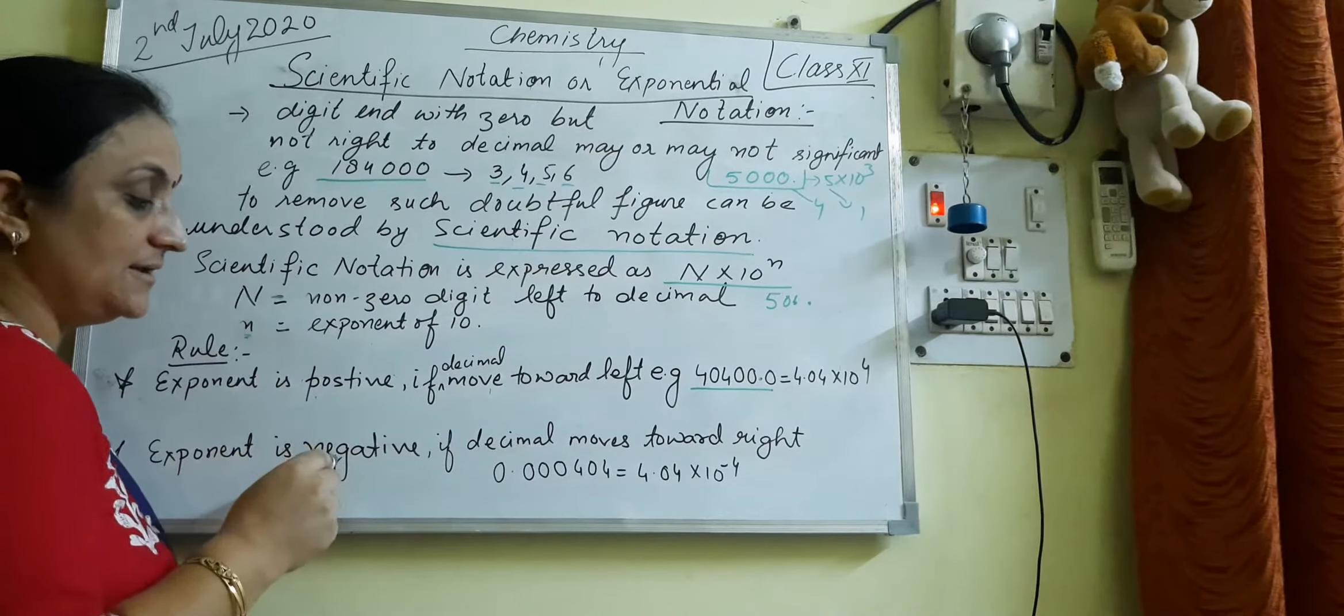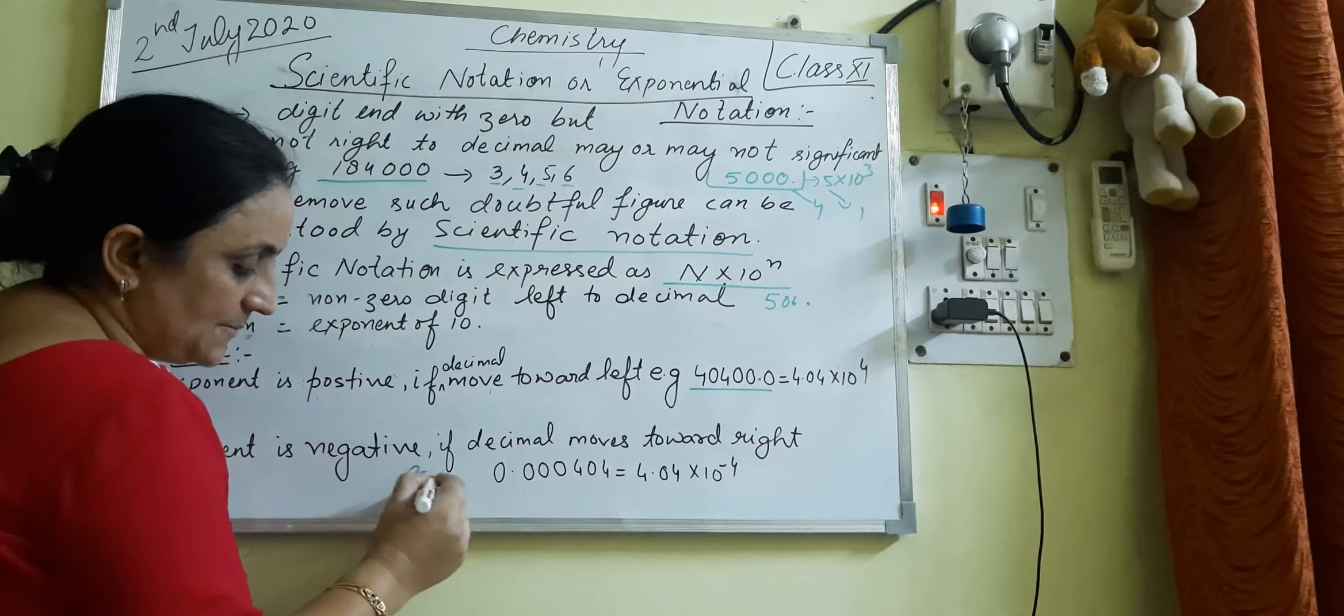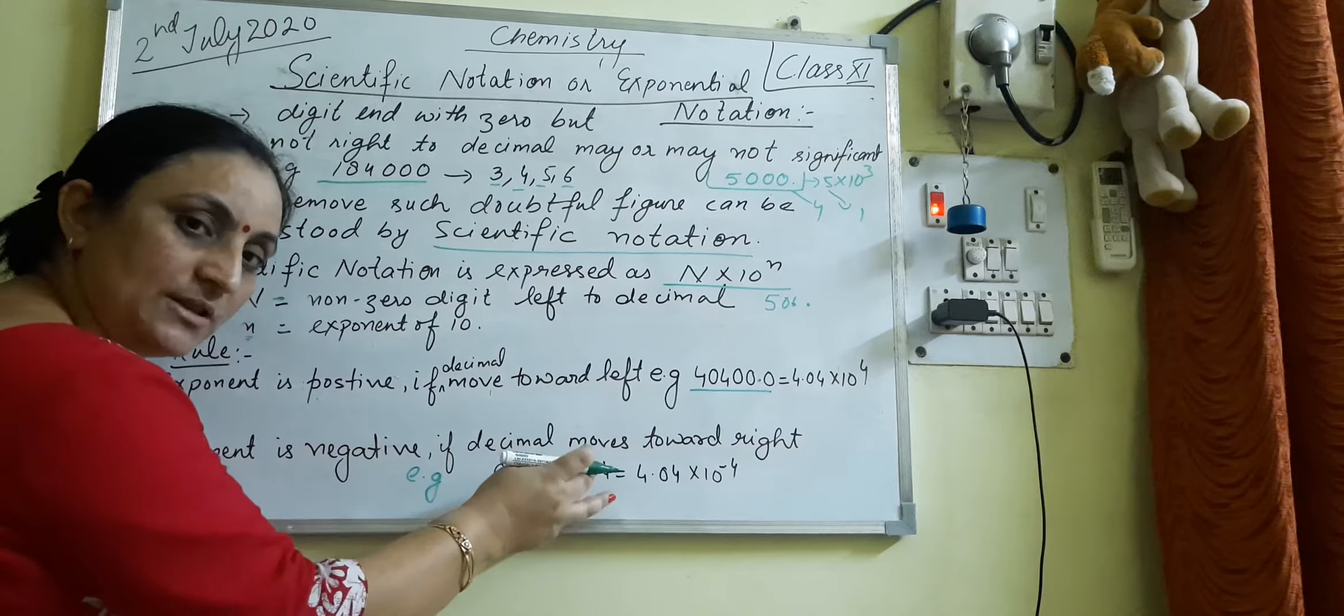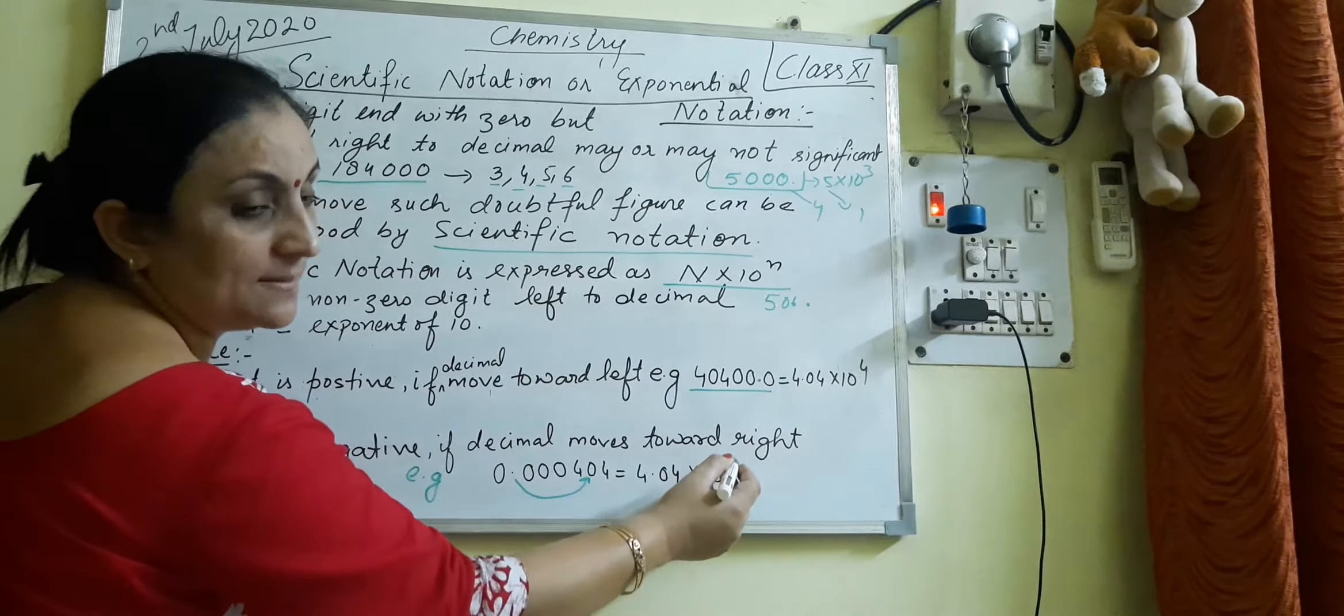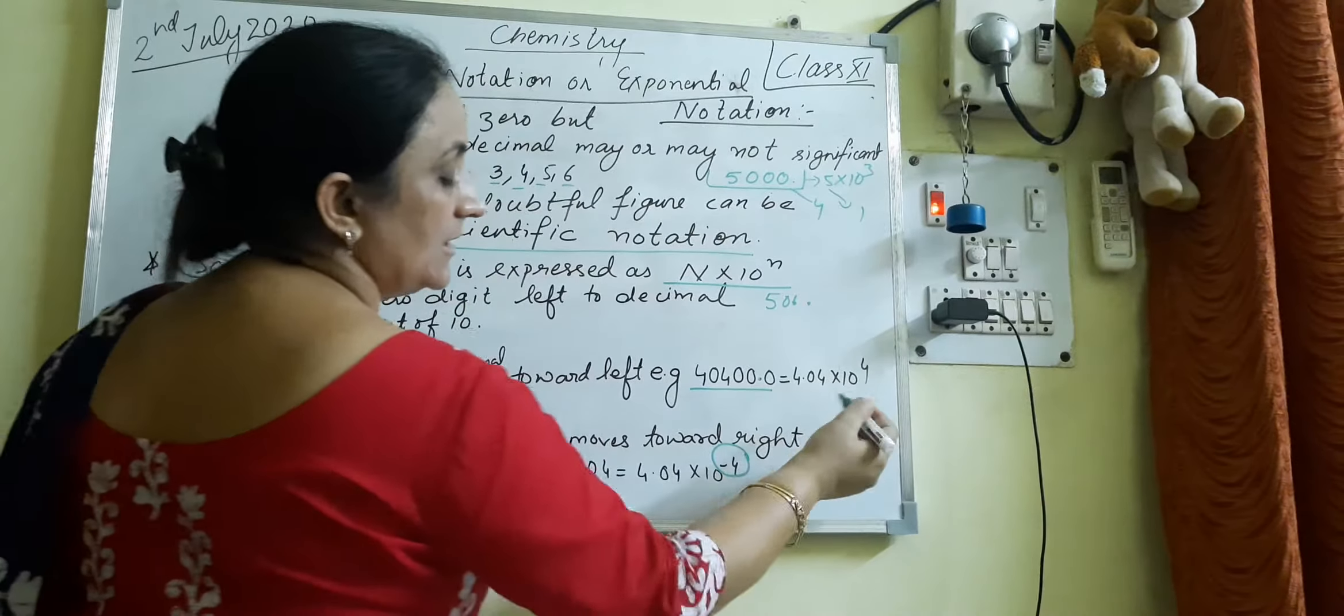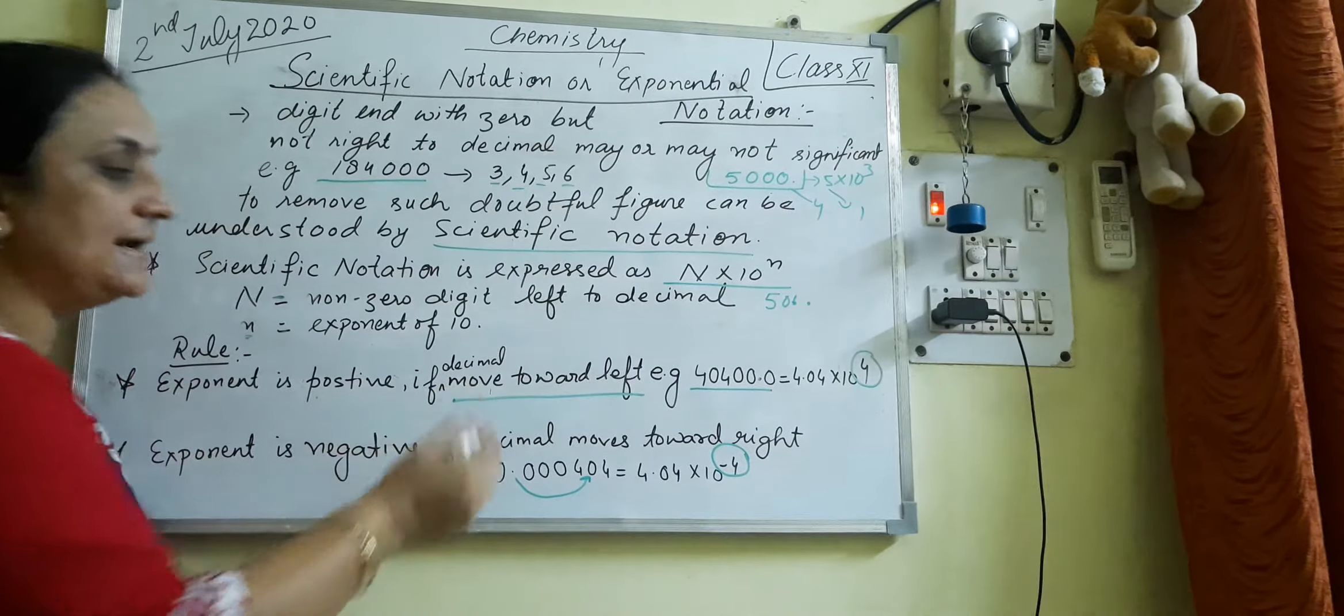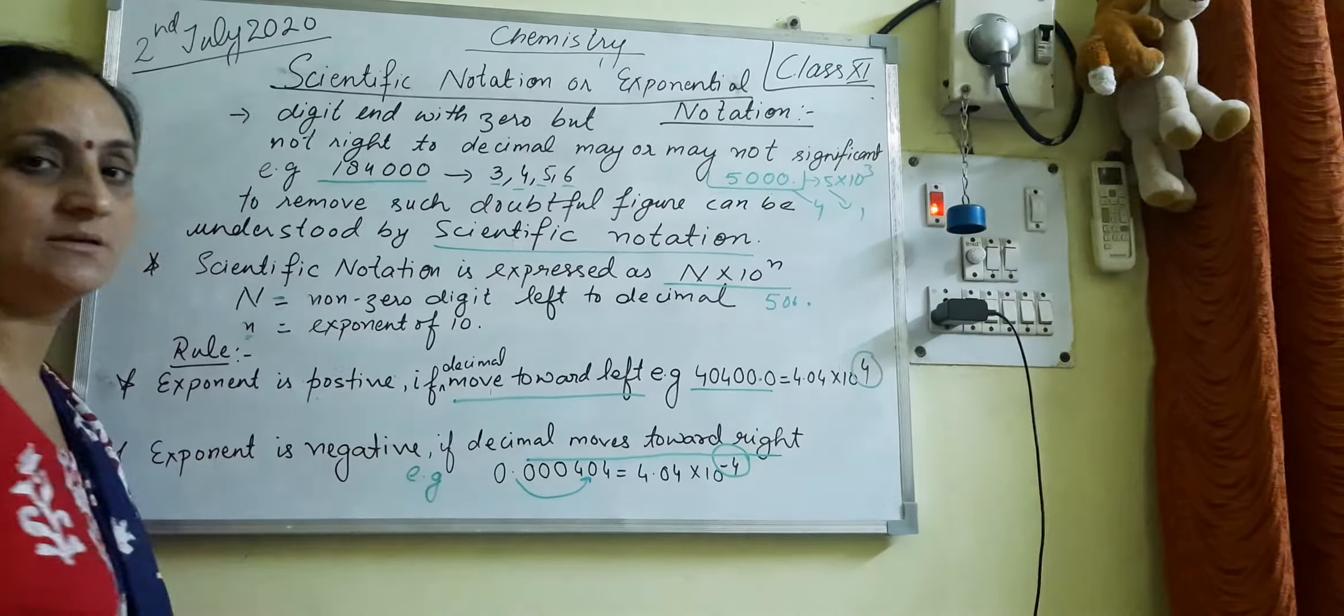And when exponent is negative, when decimal is moved toward the right side. Here is the example: 0.000404. When decimal moved toward this place, it moved toward the fourth decimal place. So we write 4.04 into 10 raise to power minus 4. So here the exponent is negative in nature and previously the exponent was positive. When it is positive, decimal moves toward the left side. When it is negative, decimal moves toward the right side.